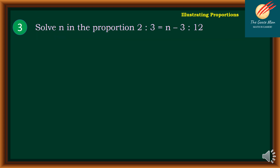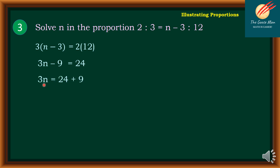Let's continue to problem number 3: solve n in the proportion 2 is to 3 is equal to n minus 3 is to 12. Using the product of the means equals the product of the extremes: 3 times n minus 3 equals 2 times 12. Simplifying using the distributive property: 3n minus 9 equals 24. Adding 9 to both sides: 3n equals 33. Dividing both sides by 3: n is equal to 11.